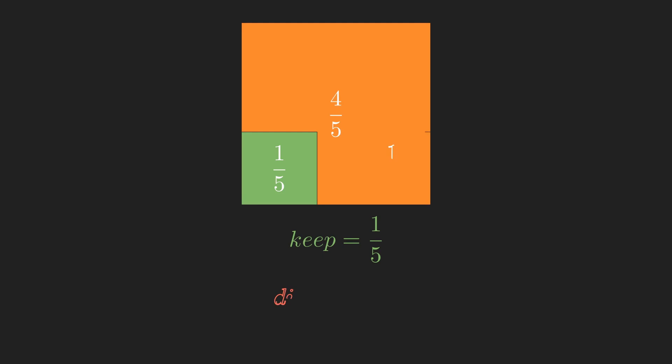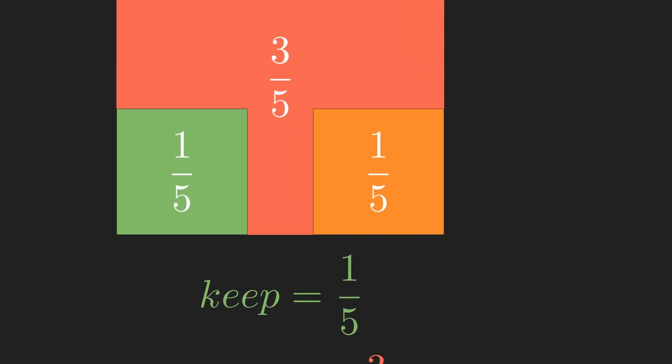Similarly, we'll take another chunk of size 1 fifth that we can use to keep working on our square. The other 3 fifths of the square will add to the discard pile. Now, let's zoom in on the working square.